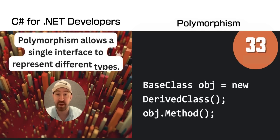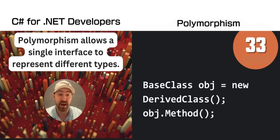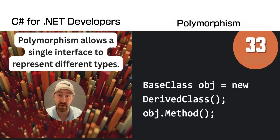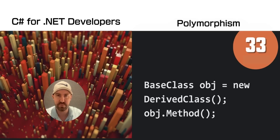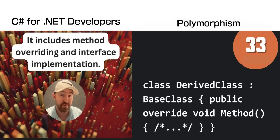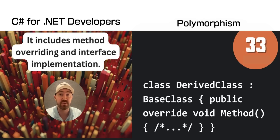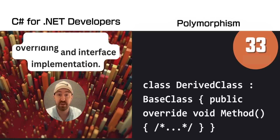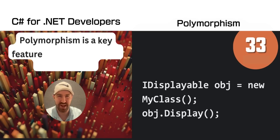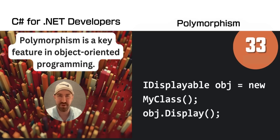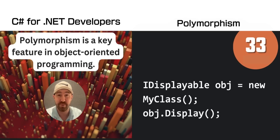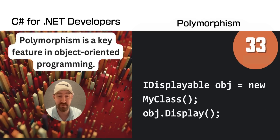Polymorphism allows a single interface to represent different types. You can then use it to override methods or implement interfaces. You better get used to it if you want to do object-oriented programming in C#. That's another example above.